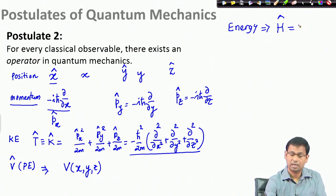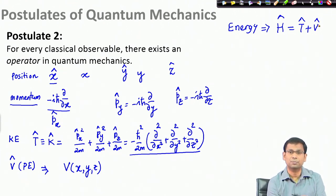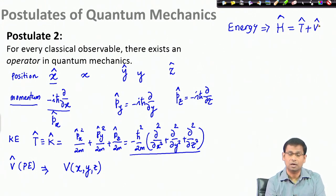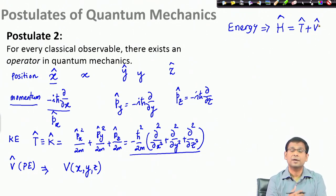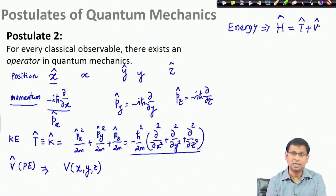So, to summarize: if I want to determine the position, I have the wave function which contains all the information, but I must bring the position operator x, y, or z. If I want to determine the momentum, I must use the momentum operator. If I want the kinetic energy, I bring the kinetic energy operator. And if I want to measure the total energy, I bring the Hamiltonian, which is the energy operator.